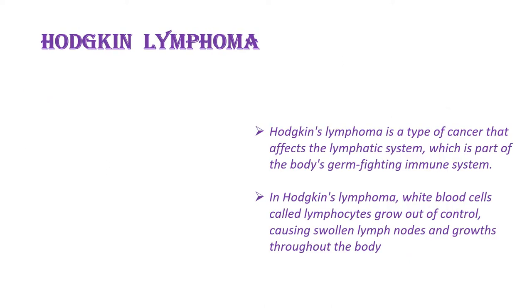Hodgkin's lymphoma is a type of cancer that affects the lymphatic system, which is part of the body's immune system. Hodgkin's lymphoma affects a component of white blood cells called lymphocytes.